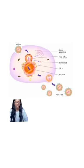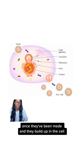Once the viruses — also known as bacteriophages or just phages — have been made and they build up in the cell, they'll eventually accumulate and burst out of the cell. This then destroys the bacteria but leaves the viruses to go on and continue the cycle in another cell.